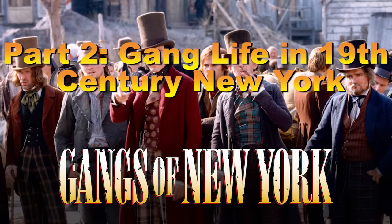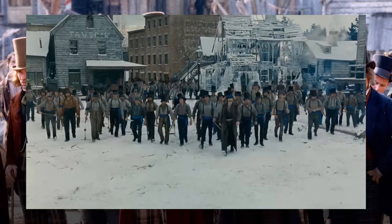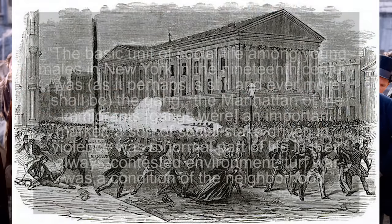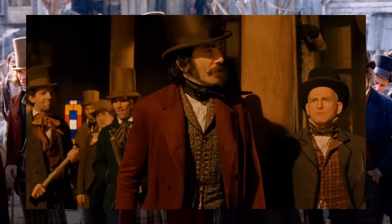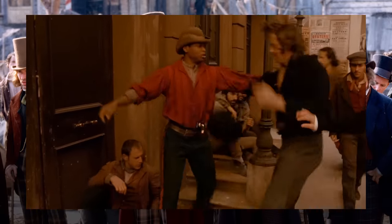Part 2: Gang Life in 19th Century New York. Gang violence is a large part of the film and consequently was part of New York City life in the mid-19th century. To quote Luke Sante in his 1991 work Low Life: 'The basic unit of social life among young males in New York in the 19th century was, as it perhaps is still and evermore shall be, the gang. The Manhattan of the immigrants — gangs were an important marker, a sort of social stake driven in. Violence was a normal part of life in their always contested environment.' Mary Ryan in her work Civic Wars points out that public displays of mob democracy, including violence, weren't a bug of the early 19th century, but a feature.